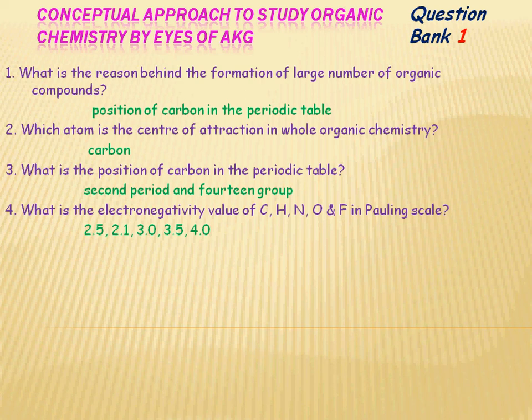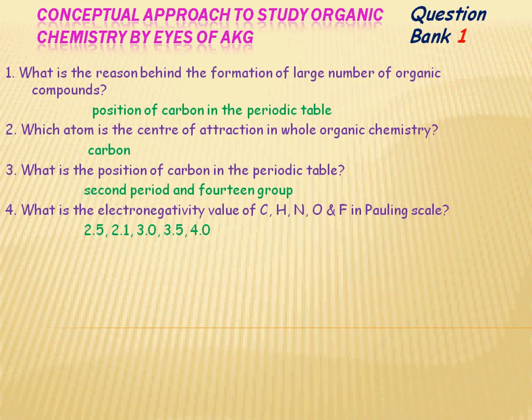The value of electronegativity is also important to decide reactions. When carbon is attached to oxygen, the electronegativity difference is 3.5 minus 2.5, which is only 1.0. But when hydrogen is attached to oxygen, the difference is 3.5 minus 2.1, that is 1.4. This larger difference is why acid-base reactions are faster compared to organic reactions. These data must be known by students.